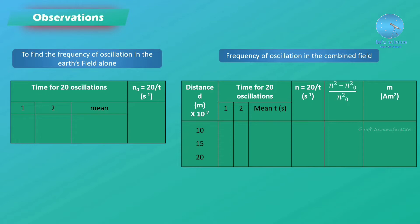There are two steps in the procedure. The first step is to find the frequency of oscillation in the earth field alone. The second step is to find the frequency of oscillation in the combined field. We count 20 oscillations to find the time period, and the inverse of the time period gives the frequency.